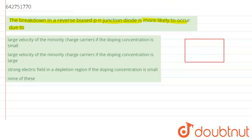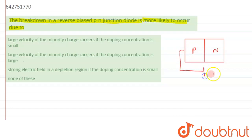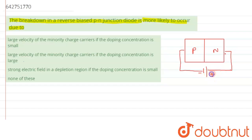Let's say this is the diode in which there is a P section and an N section. When it is said to be reverse biased, we connect the negative terminal of the battery to the P side and the positive terminal of the battery to the N type. This condition is known as the reverse bias condition.